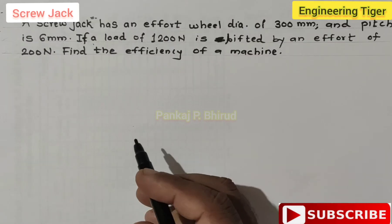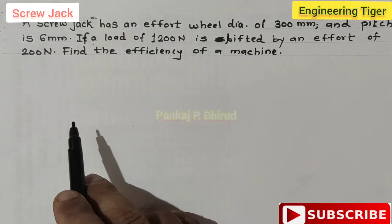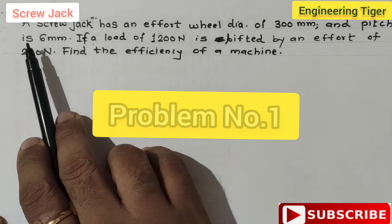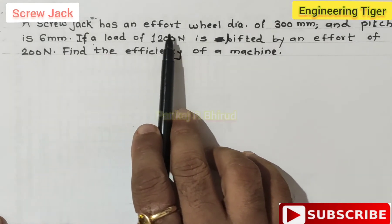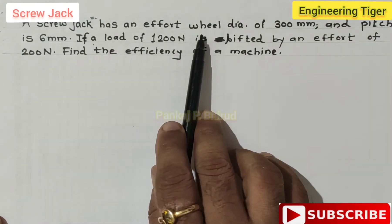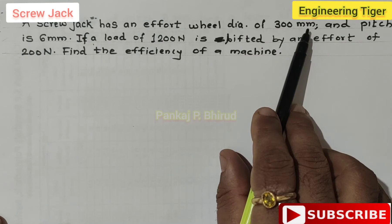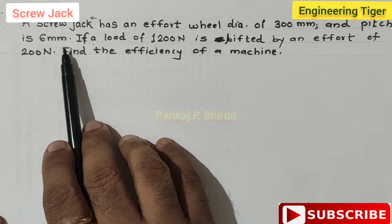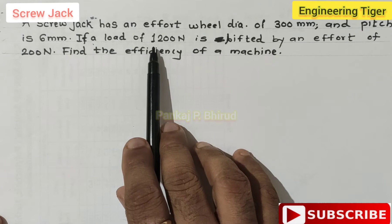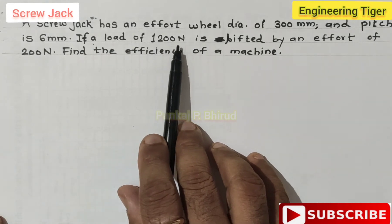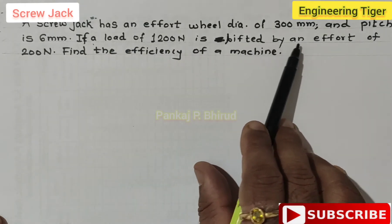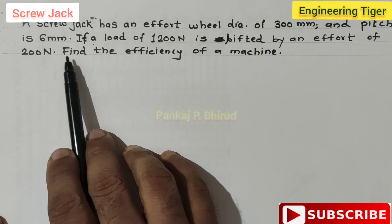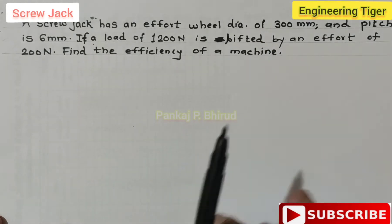Let us take the first numerical problem. A screw jack has an effort wheel diameter of 300 mm and the pitch is 6 mm. If a load of 1200 Newton is shifted by an effort of 200 Newton, find the efficiency of the machine.